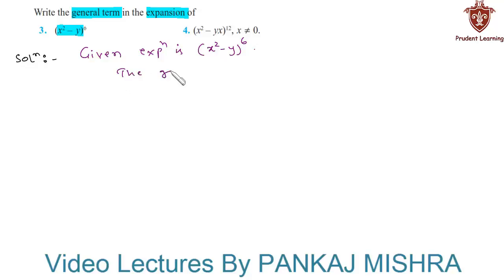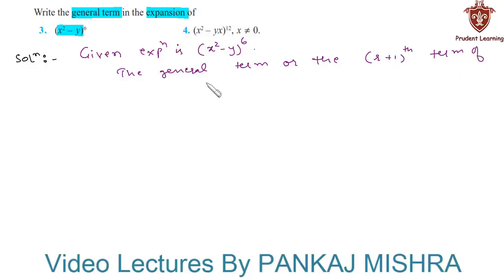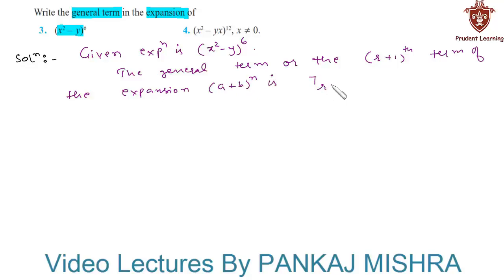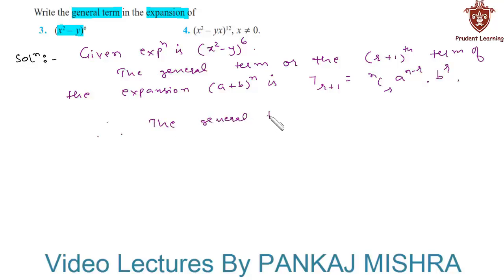We know that the general term, or the (r+1)th term, in the expansion of (a + b)ⁿ is T(r+1) = nCr × a^(n-r) × b^r.